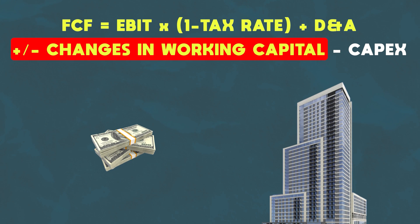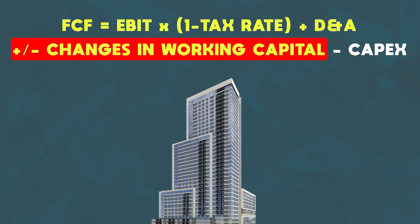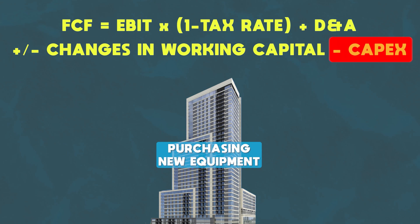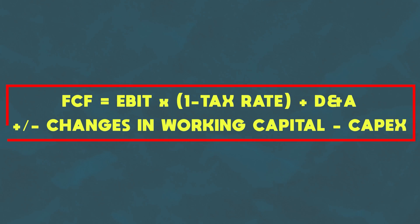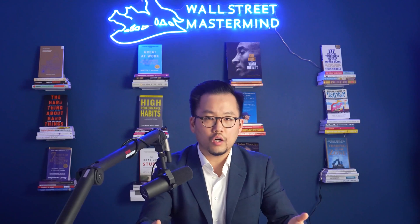Last but not least, some of the cash will be reinvested back into the business — for example, by purchasing new equipment, also known as CapEx or capital expenditures. Once all of that is taken care of, any remaining cash can then go to the company's investors. And that's how you derive the free cash flow formula. This free cash flow is what helps determine what the company is worth from the investor's point of view, because this is the cash they can actually get their hands on.